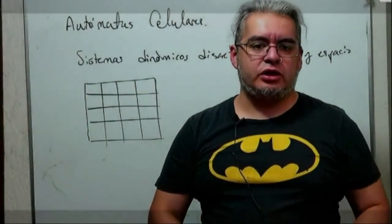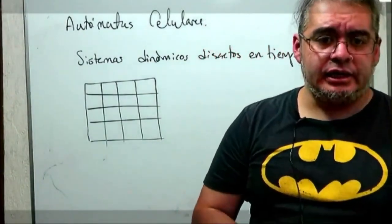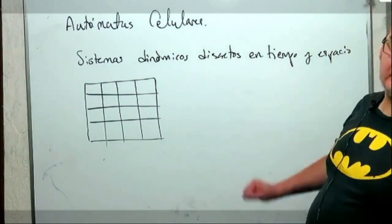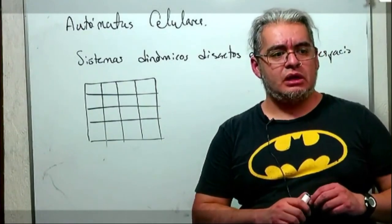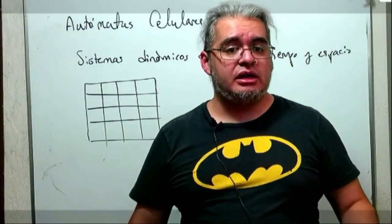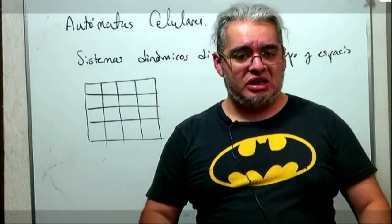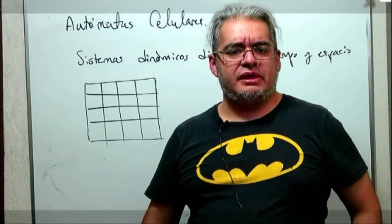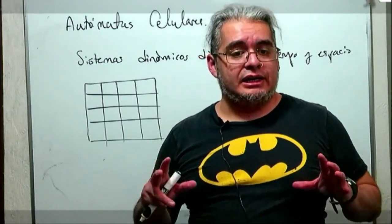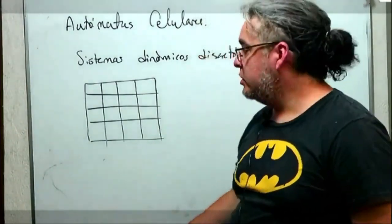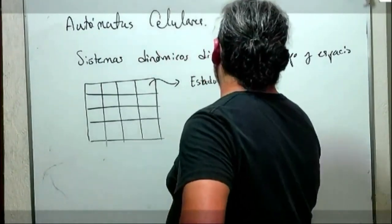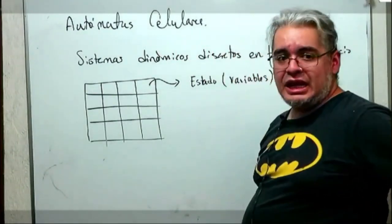Entonces vamos a estudiar un poco la teoría de autómata celular. Habíamos dicho un sistema dinámico que es discreto en tiempo y en espacio. Vamos a pensar entonces que la parte espacial queda representada por un arreglo de algún tipo de retícula. En este caso tenemos una retícula rectangular, pero podría ser cuadrada o cualquier figura que tesele regularmente el plano. Cada una de estas celdas es una componente individual de nuestro modelo.